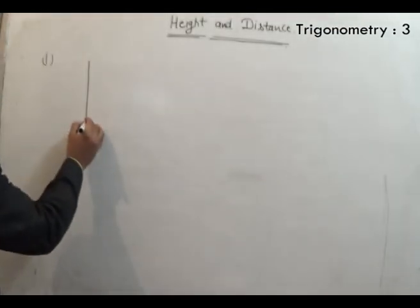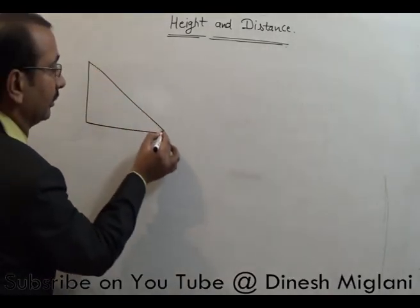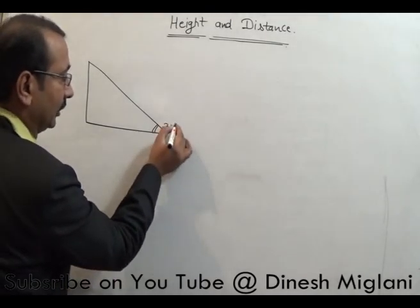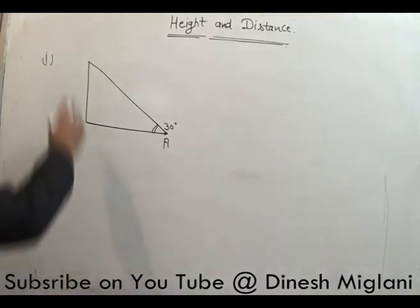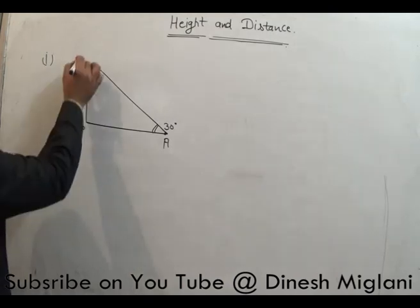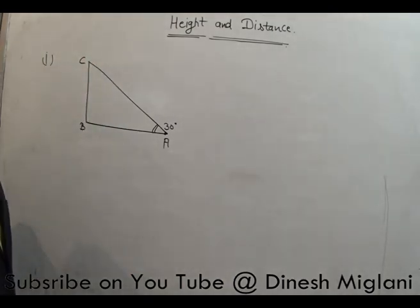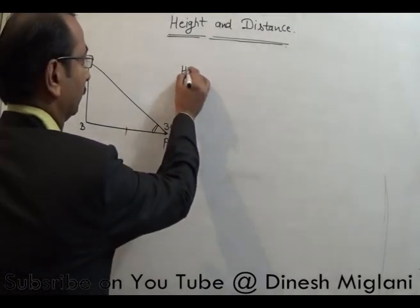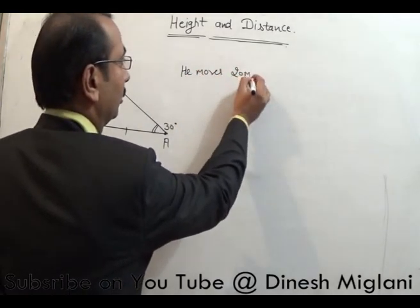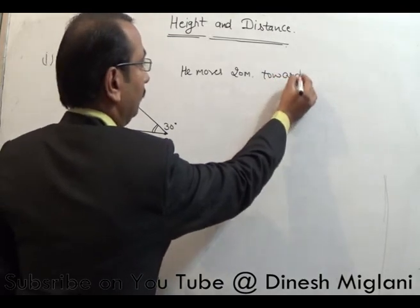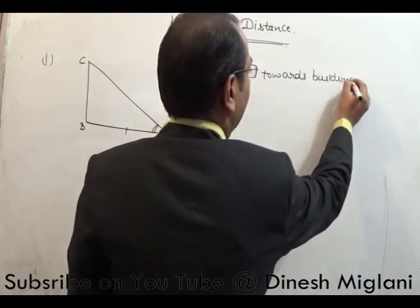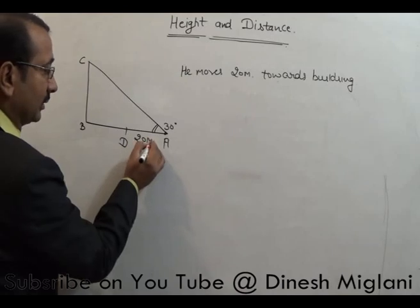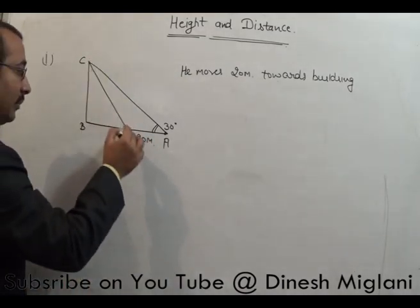A man is standing at point A and there is a building BC. From that point he looks at the top of the building and finds the angle of elevation to be 30 degrees. Then he moves 20 meters towards the building, reaching point D. Now he observes that his angle of elevation has become 60 degrees.